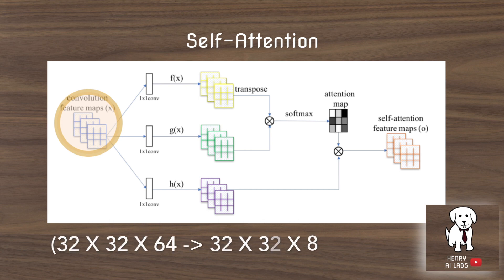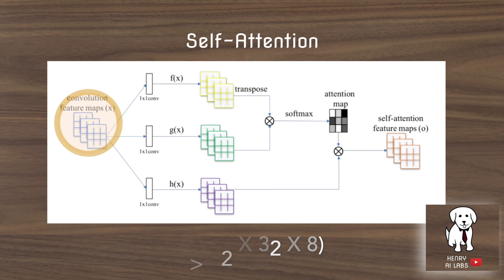For example, after a convolution layer you might have 32x32 height and width but 64 feature maps. After a 1x1 convolution, as in F, G, and H, you would still have 32x32 height and width dimensions, but you would now maybe have like 8 channels or feature maps.